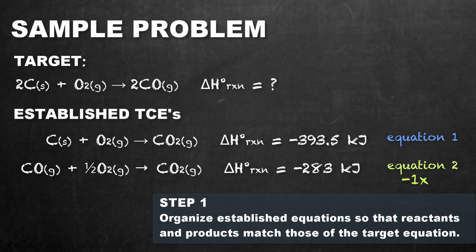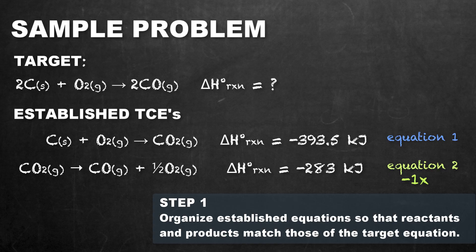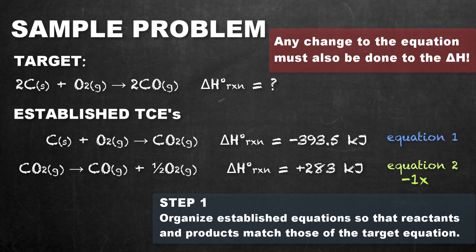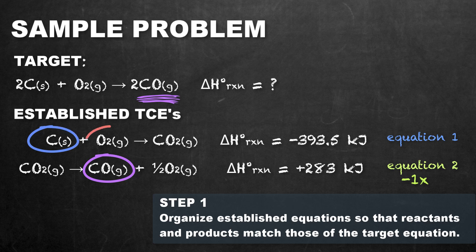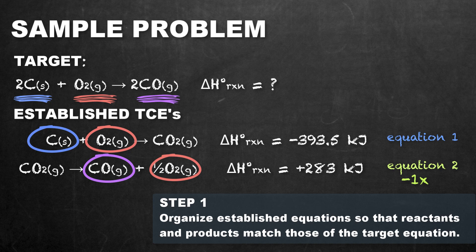We are going to reverse equation 2 — the reactants become products and the products become reactants. Any manipulation made to the equation using Hess's Law must also be made to the enthalpy change. If we reverse the equation, we also reverse the sign, so something exothermic in one direction becomes endothermic in the other. After reversing, we now have carbon monoxide on the product side, with carbon and oxygen on the reactant side.